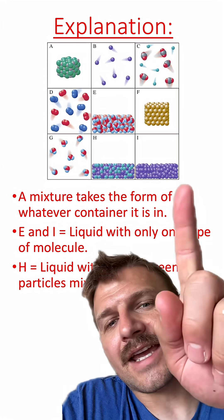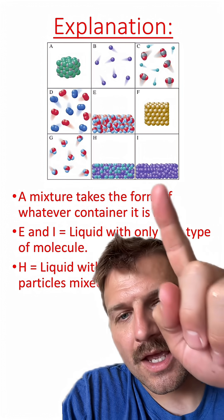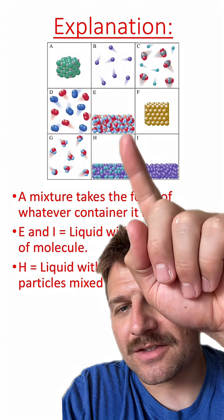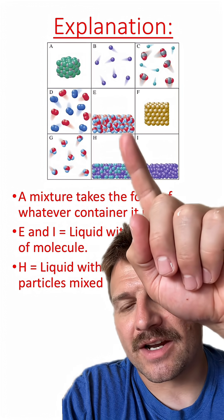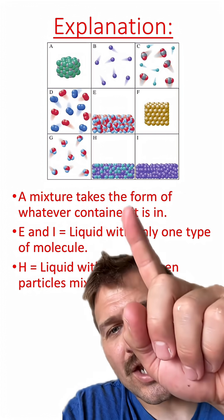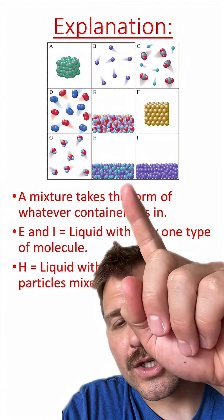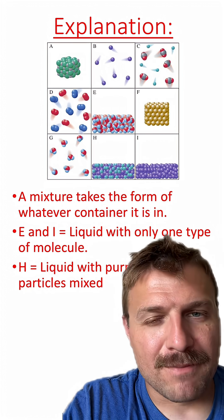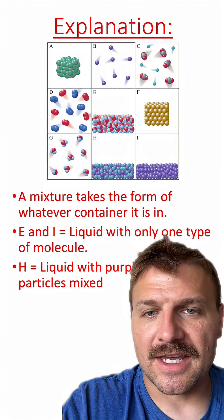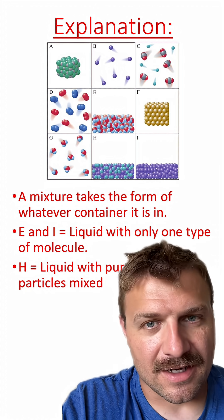I is a single type of liquid, while E is also a single type of liquid — however, it is a compound. H has two different molecules, which means it's a mixture. It's also a liquid since it's taking the form of the container that it's in.